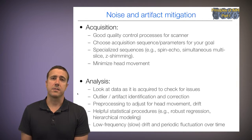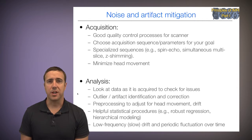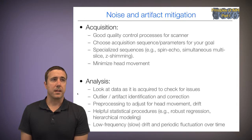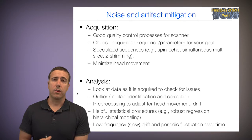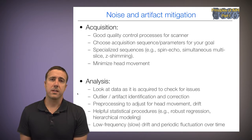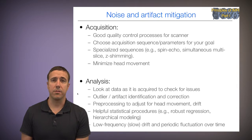The second line of defense is in the analysis. When we're analyzing data, the most important first thing to think of is look at the data as it's acquired and check for issues that you could fix before moving forward. Secondly, we employ outlier or artifact identification and correction — there are a number of software packages for doing that. Standard preprocessing techniques are used to adjust for head movement and drift, and we'll discuss some of those as we go along in preprocessing.